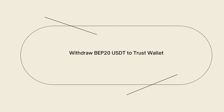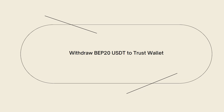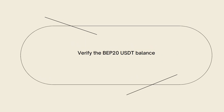Now withdraw the BEP20 USDT to your Trust Wallet. After the conversion is complete, withdraw the newly obtained BEP20 USDT from the exchange to your Trust Wallet. Provide your Trust Wallet BEP20 USDT address as the withdrawal address on the exchange and initiate the withdrawal.